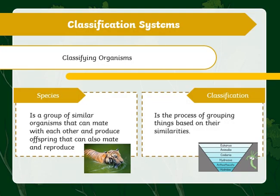Last week we started with classifying organisms. We found out what species are, which is a group of similar organisms that can mate with each other and produce offspring that can also mate and reproduce. We then decided that species are classified into groups based on their similarities.